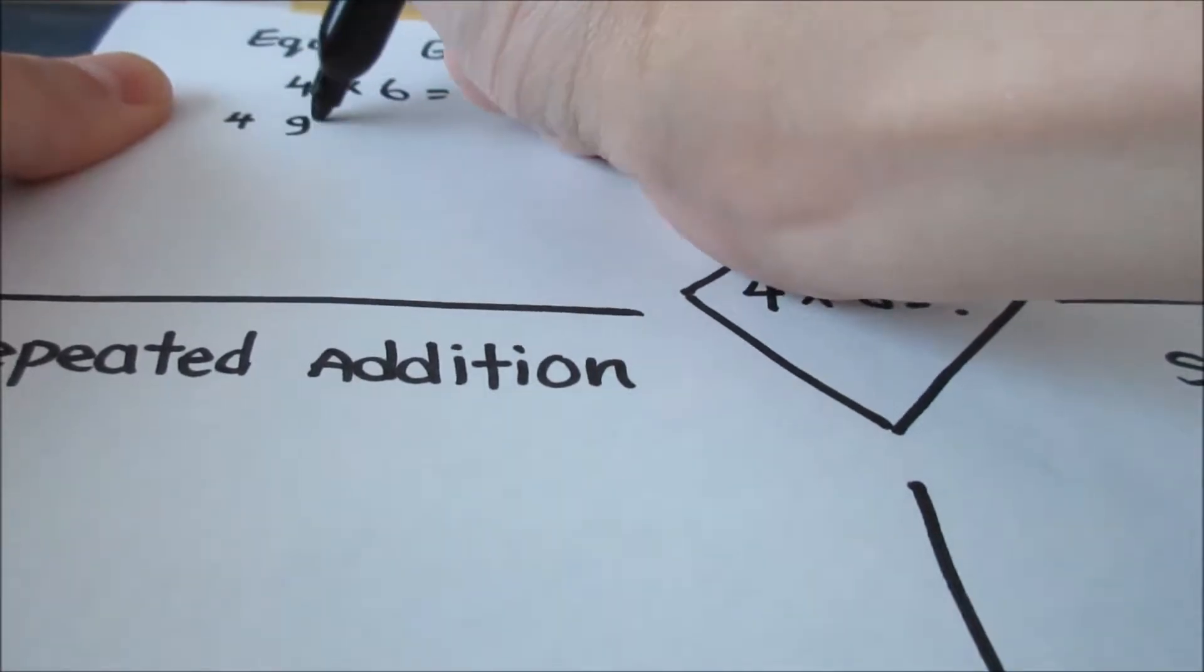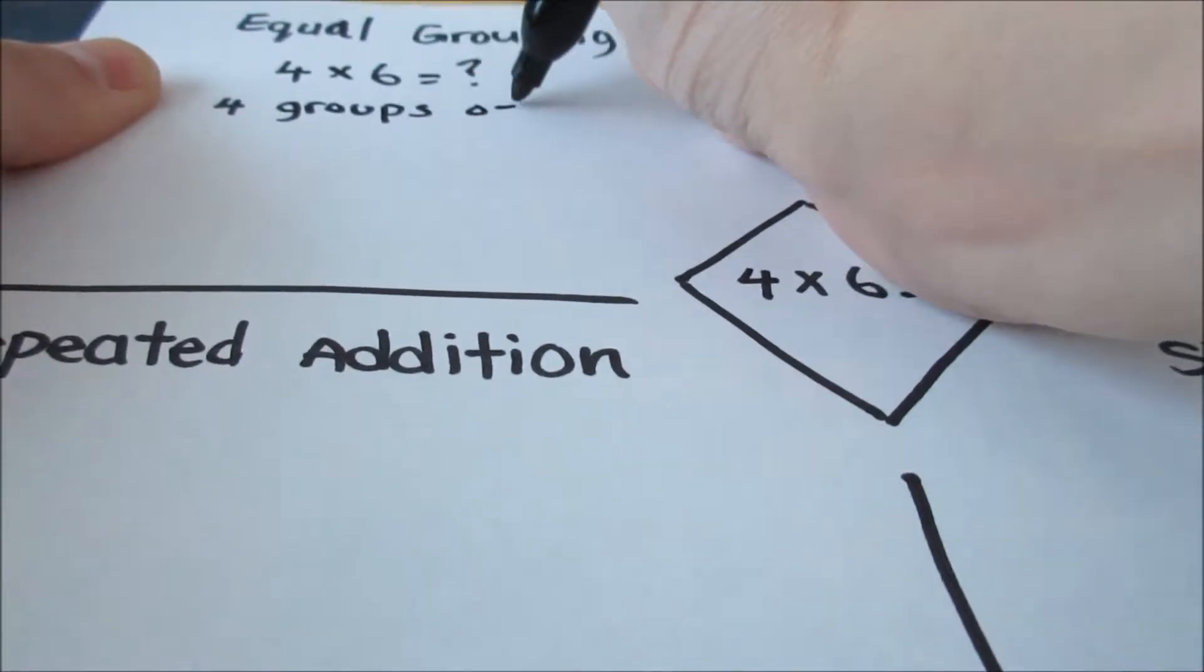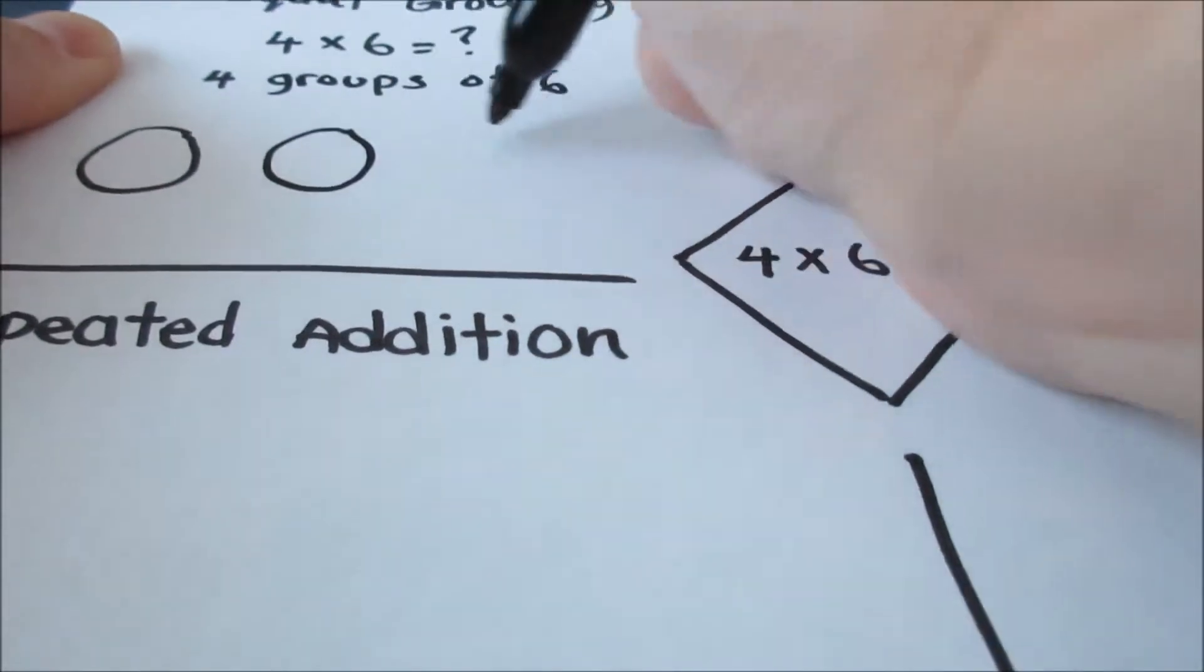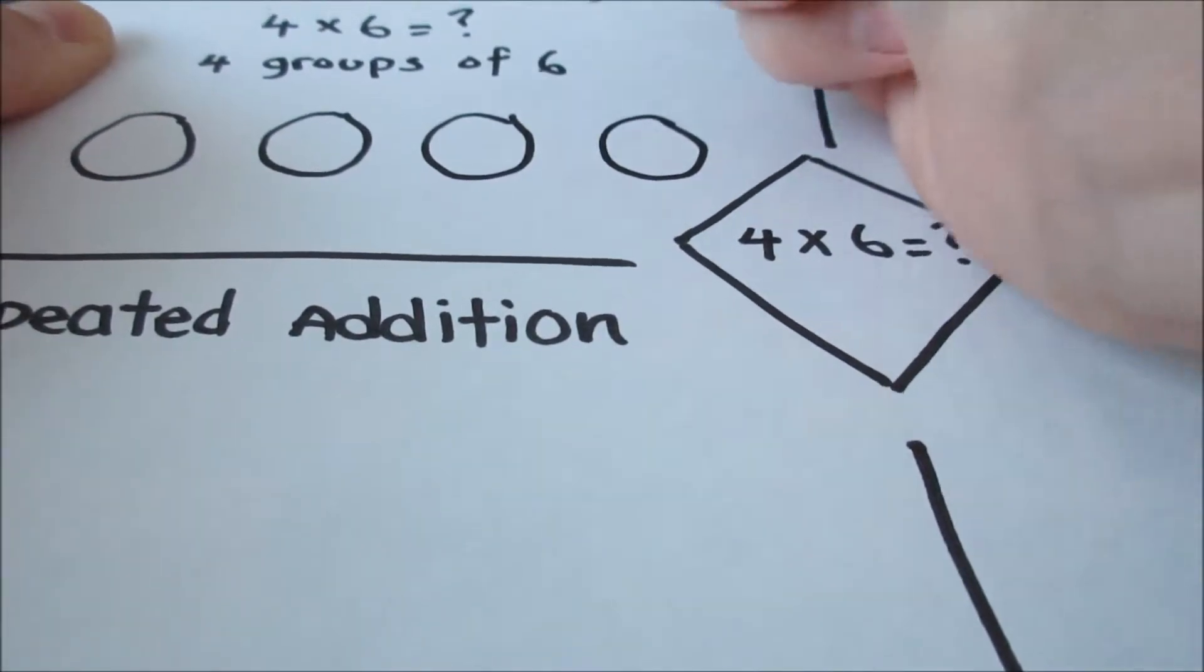I'll think 4 groups of 6. So I have 4 groups and there are 6 objects inside. I start by drawing out my 4 groups. Then I'm going to draw 6 in each group.